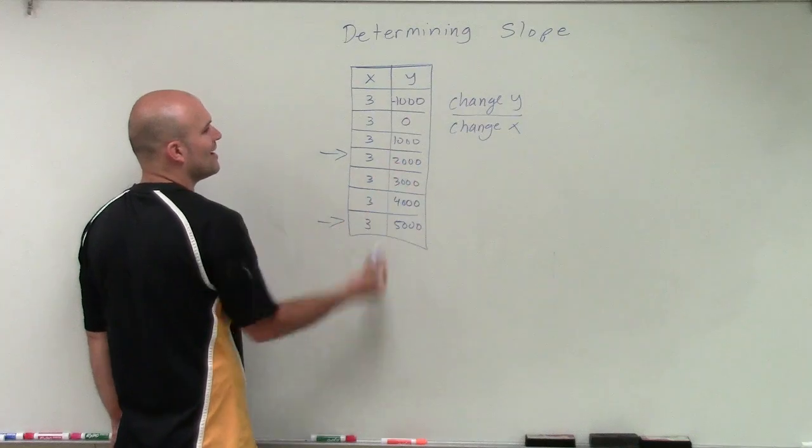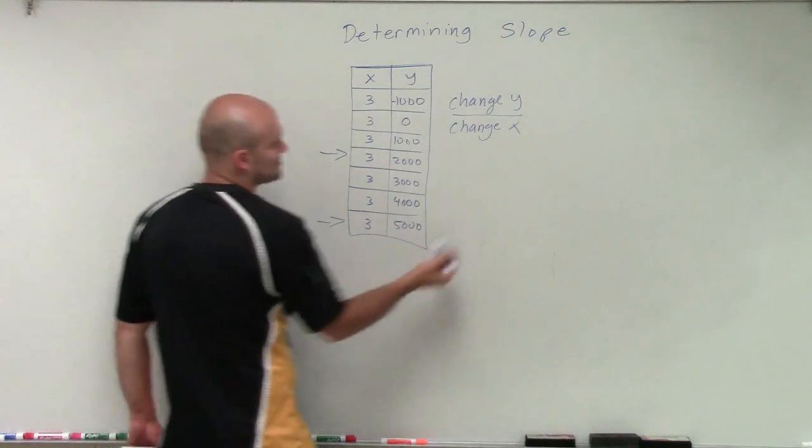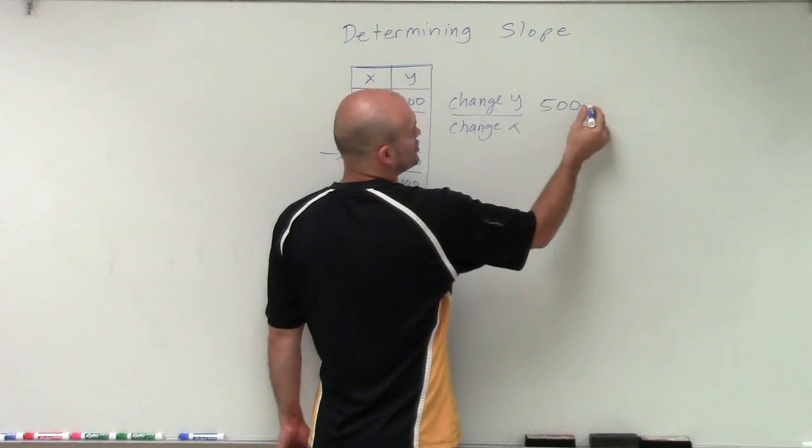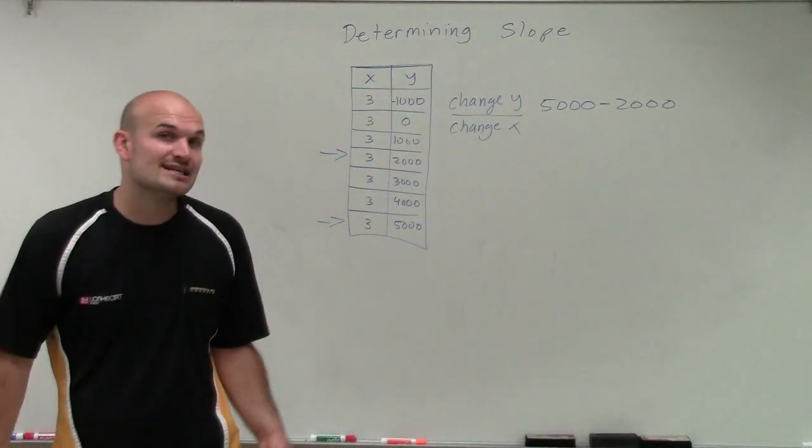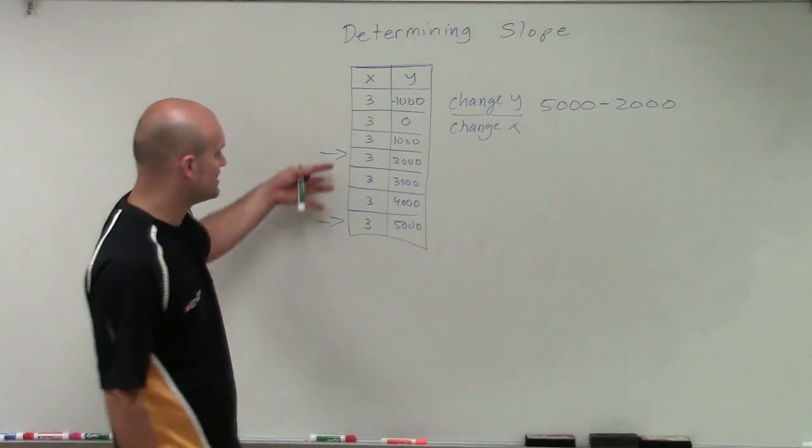So to find the change in my y-values, I go from 2,000 to 5,000. So to find the difference or the change, I'm going to subtract 5,000 minus 2,000. That's going to be the change in my y-coordinates for these two points.